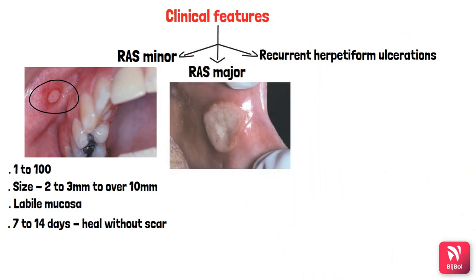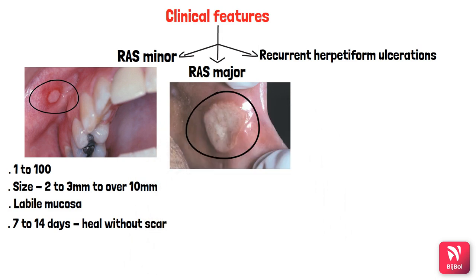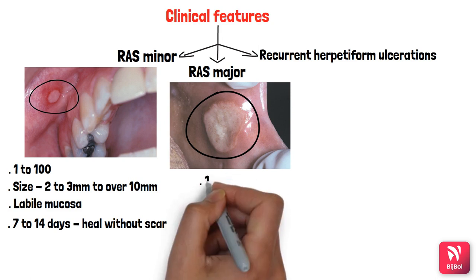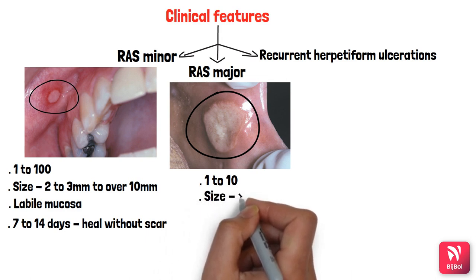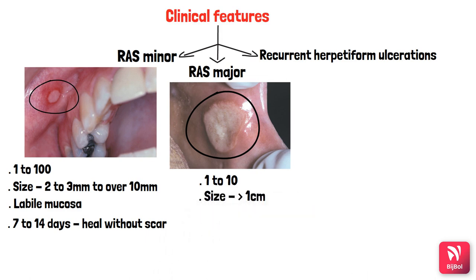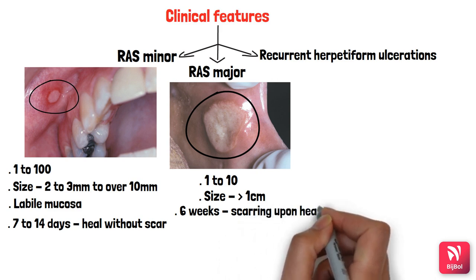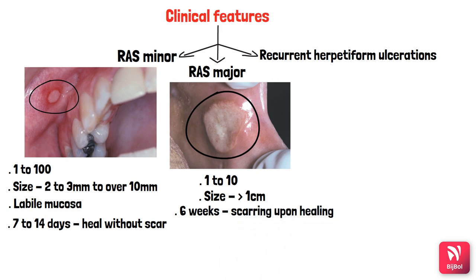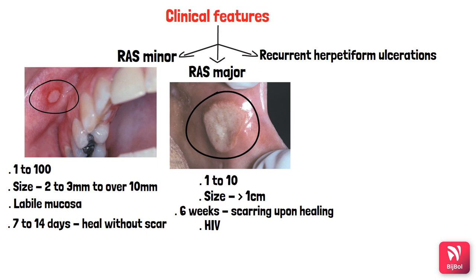Major aphthous ulcerations are also called Sutton's disease. Individual lesions are larger and persist longer than minor aphthous ulcerations. In a single outbreak, the number ranges from 1 to 10, and each lesion is more than 1 cm — sometimes over 3 cm in diameter. They also occur on labile mucosa, persist for up to 6 weeks, and heal with scar formation. Major aphthous ulcers are most commonly associated with HIV infections.